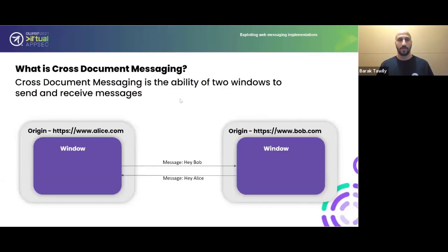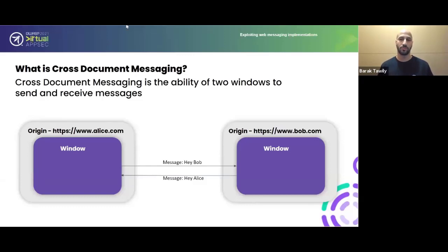What is cross-document messaging? It's the ability to send and receive messages from one window to another. For example, alice.com holds a window and bob.com holds another. Alice sends a message to Bob saying 'hi Bob,' Bob receives it, processes it, and sends back 'hey Alice.' It's simply two windows communicating. There is no network involvement — it's all in-memory communication happening inside the browser.